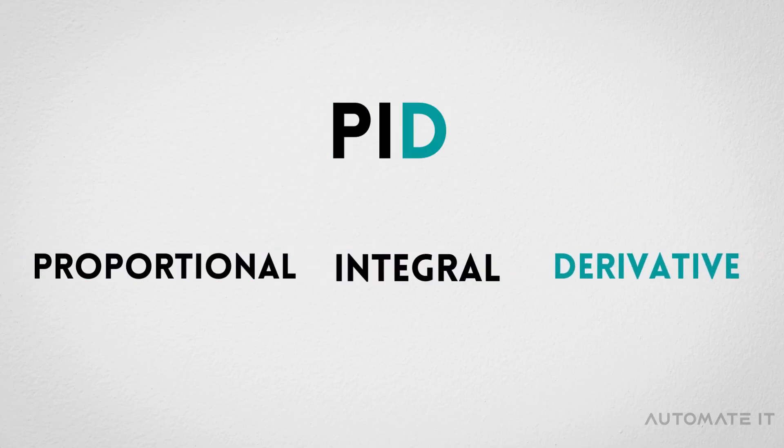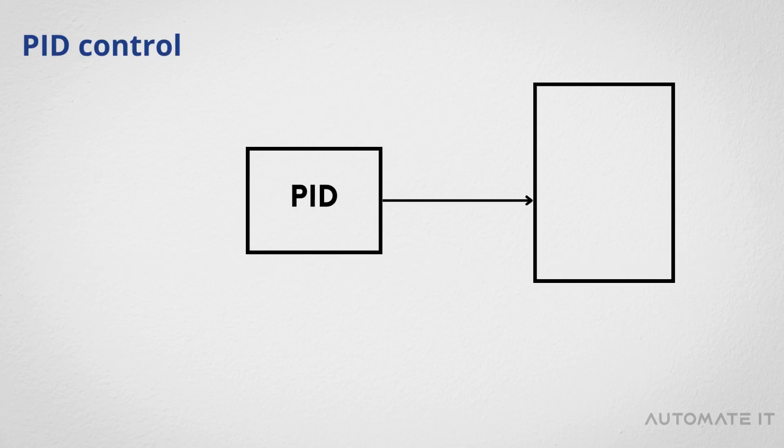The term PID stands for Proportional Integral Derivative and it is a commonly used control method for controlling a wide range of processes like pressure, flow, and temperature.